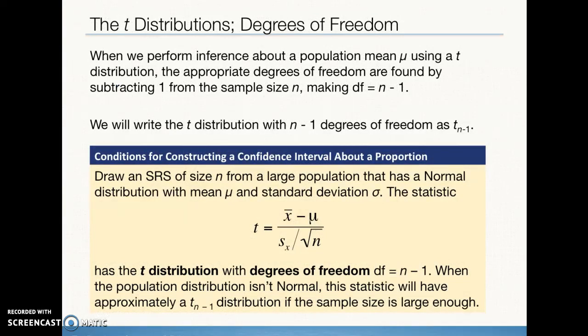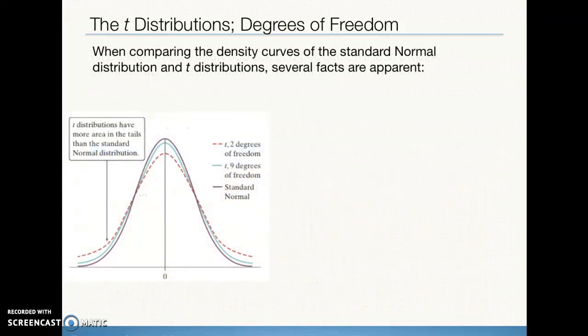For this chapter, the degrees of freedom is going to be based on the sample size, and it's going to be the sample size minus 1. So our degrees of freedom is going to help us to find the t-star when we're creating our confidence interval. Here we see various curves. The tall one in the center, the purple solid, is the standard normal, and you can see that we have two curves shown: one with two degrees of freedom, which means that's the red dashed line, that would be a sample size of 3. And the other one, the dotted aqua color, is 9 degrees of freedom, so that would have been a sample size of 10.